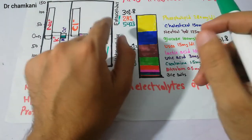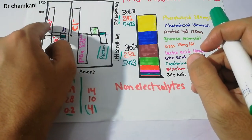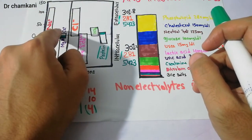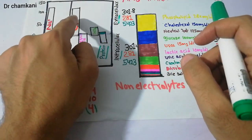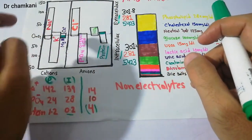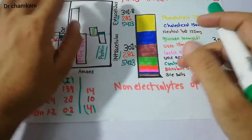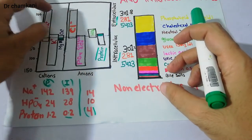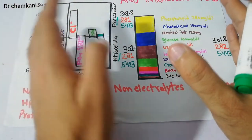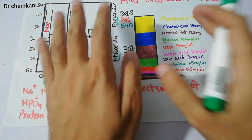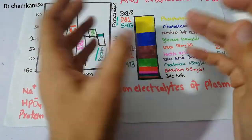Similarly, there are some important cations like sodium and calcium in the extracellular fluid compartment, and some anions like chloride outside the cell. These different electrolytes and particles will determine the osmolarity and osmotic pressure of the extracellular compartment.